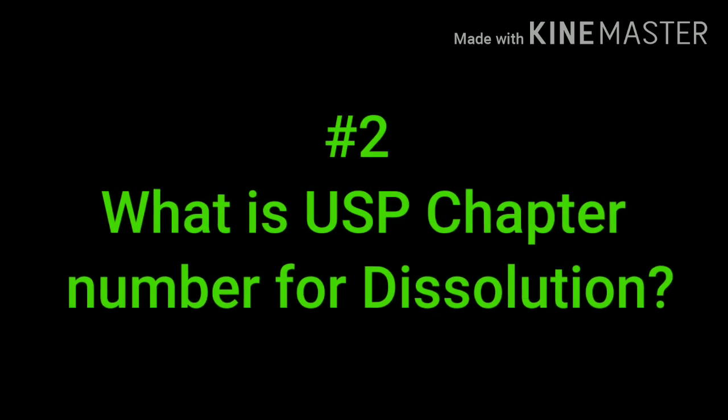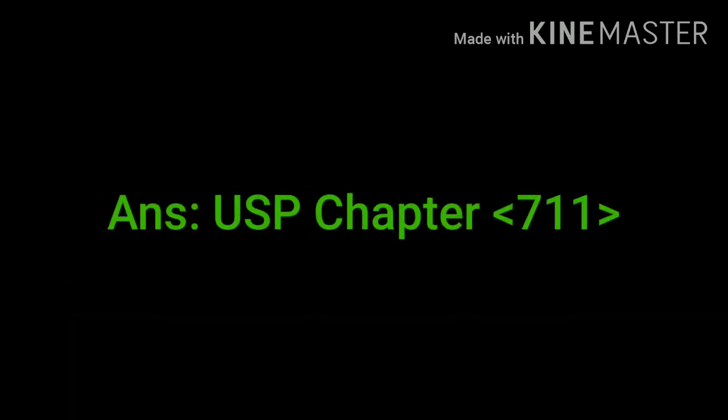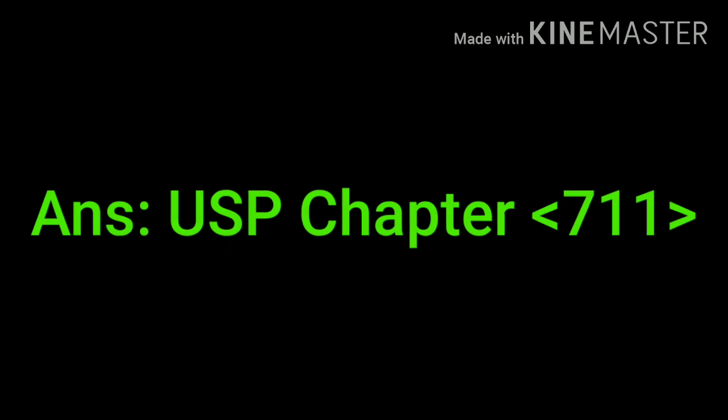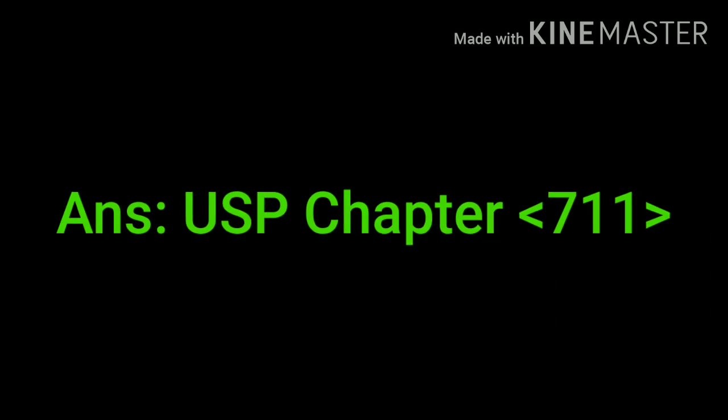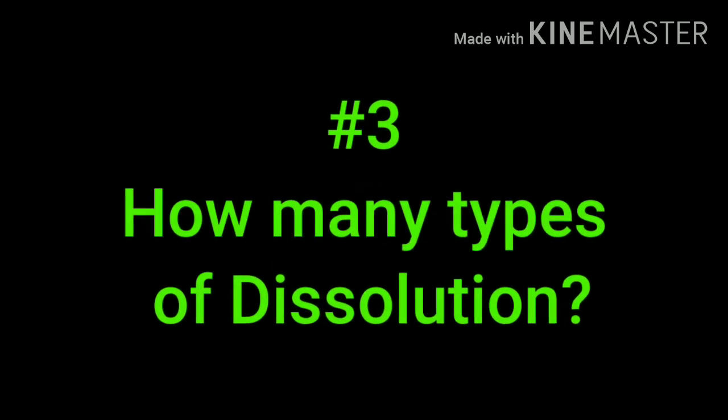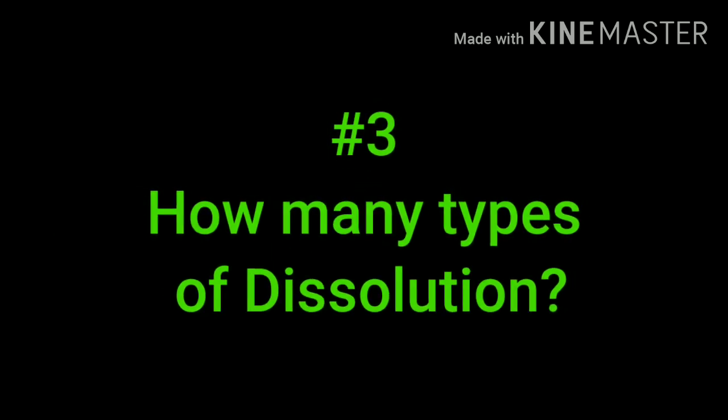What is the USP chapter number for dissolution? The USP chapter number for dissolution is 711. How many types of dissolution apparatus are there? There are a total of seven types as per USP.